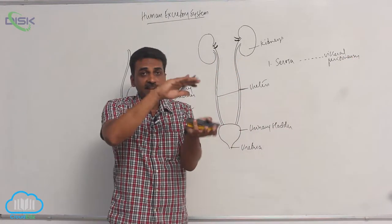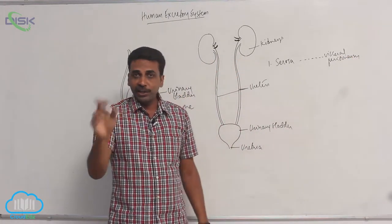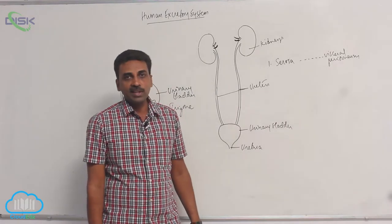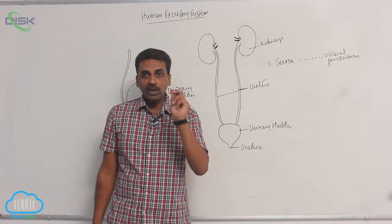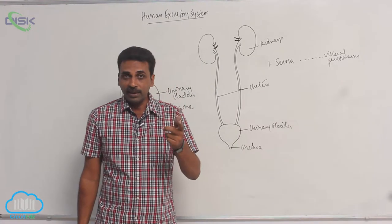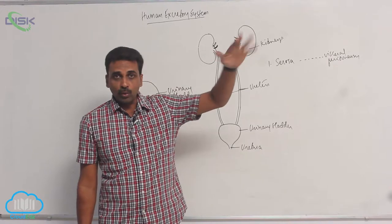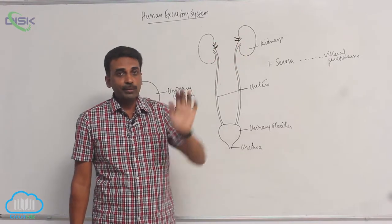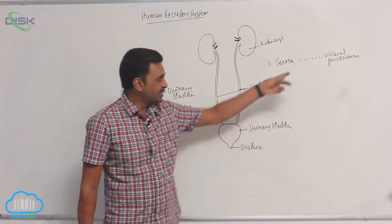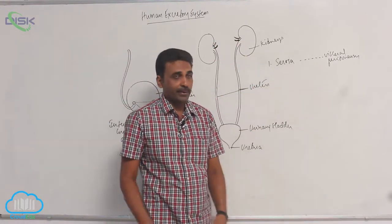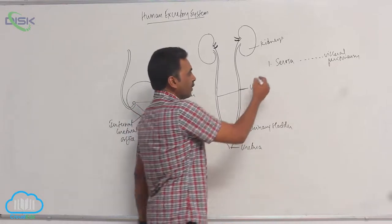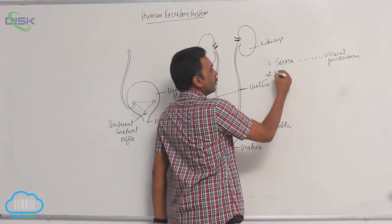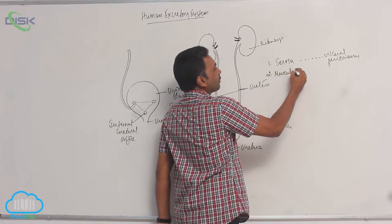In true coelomates, the body cavity is lined by mesodermal epithelium. On the outside it is parietal peritoneum; on the inside it is visceral peritoneum. So the serosa is the visceral peritoneum, and this is followed by the muscularis layer.